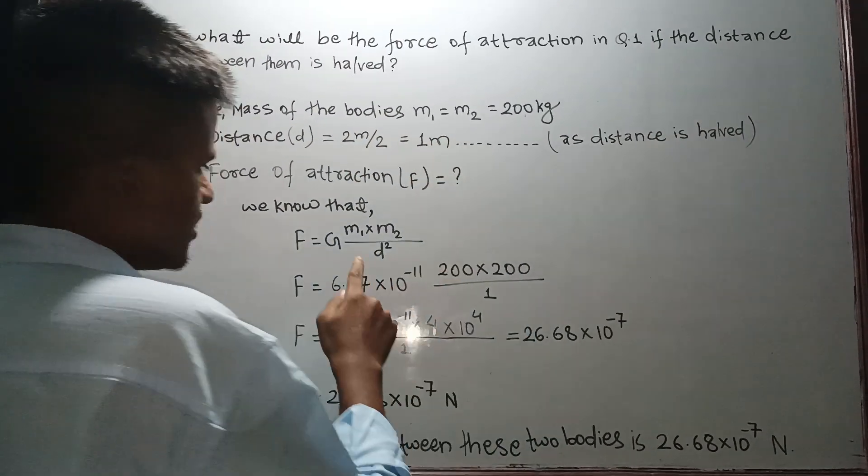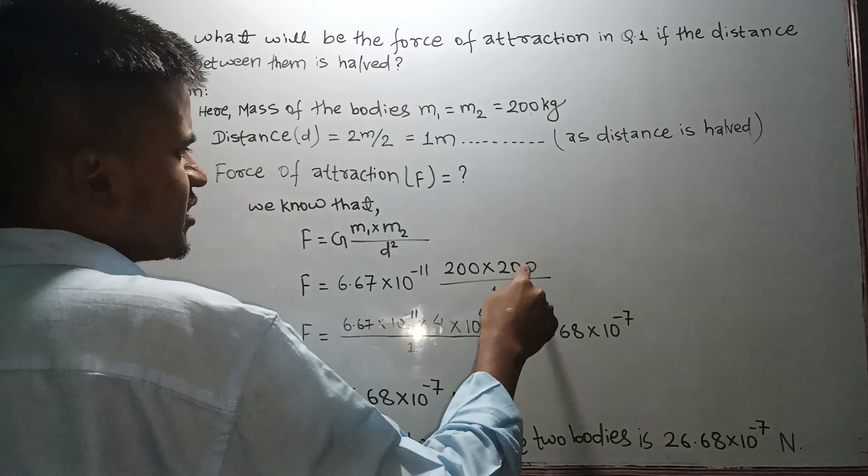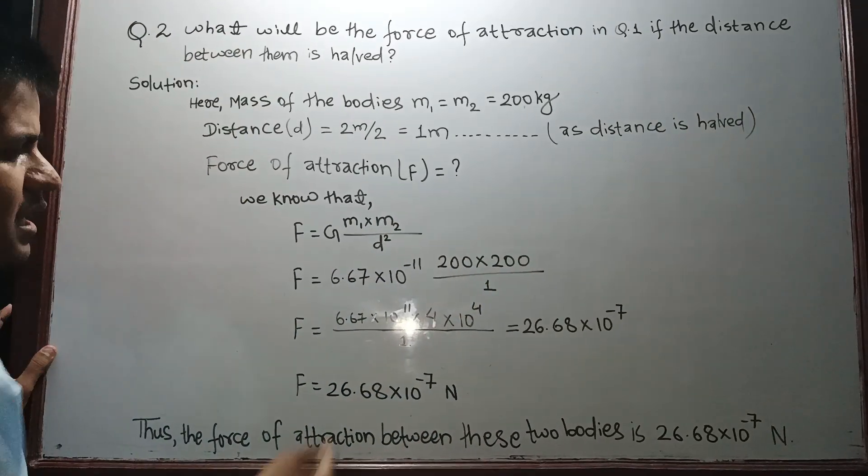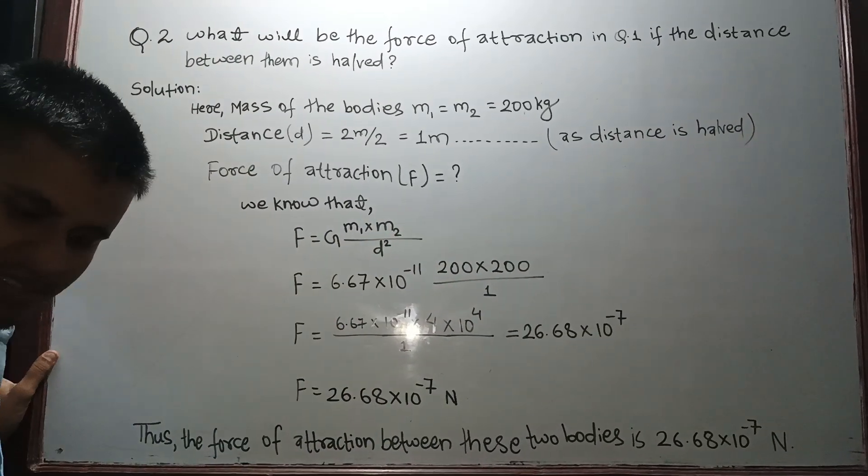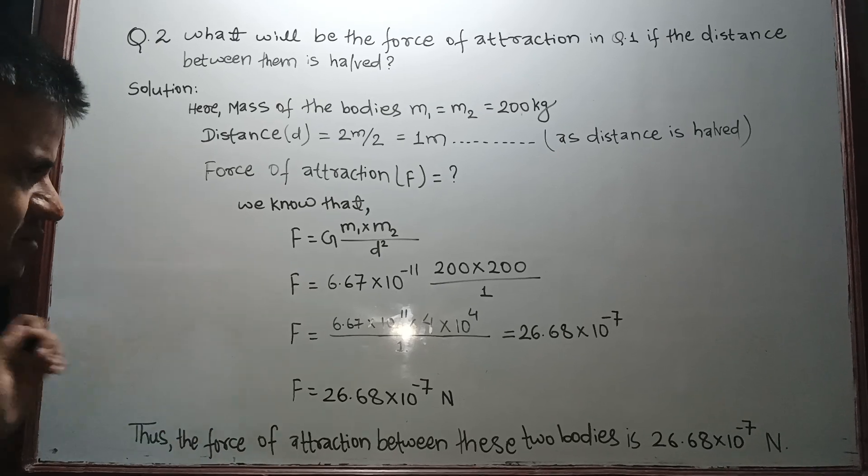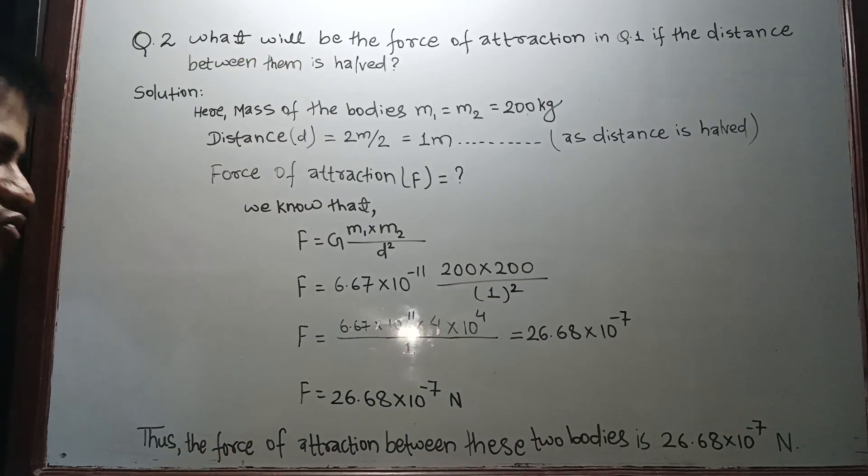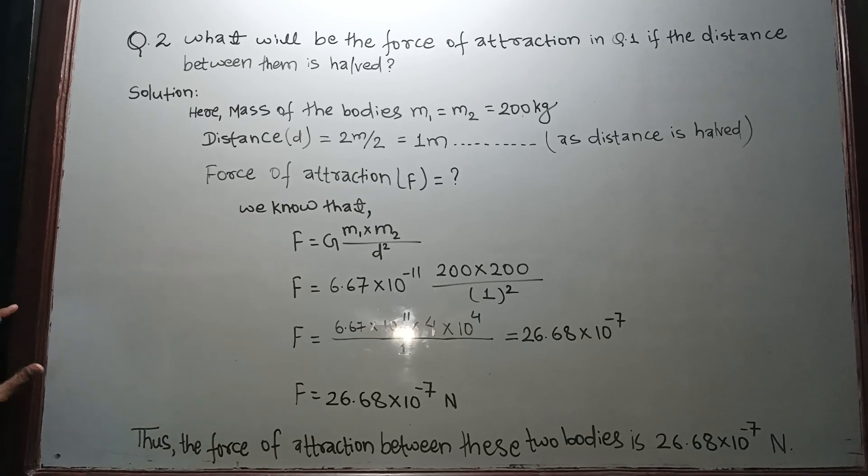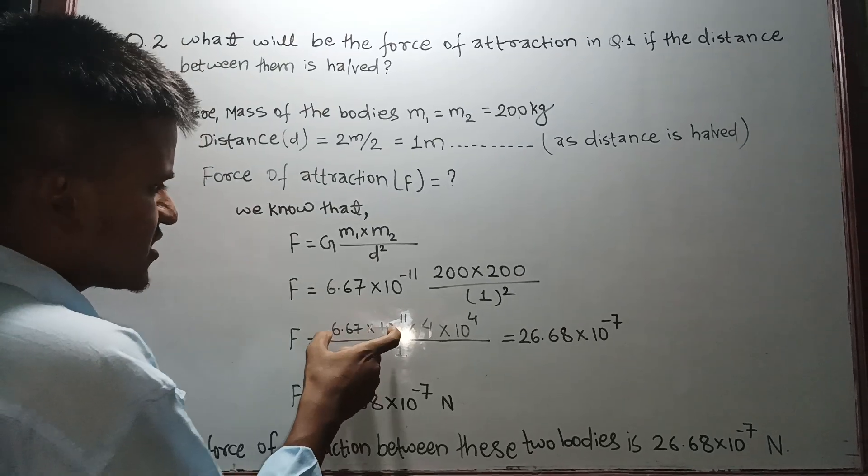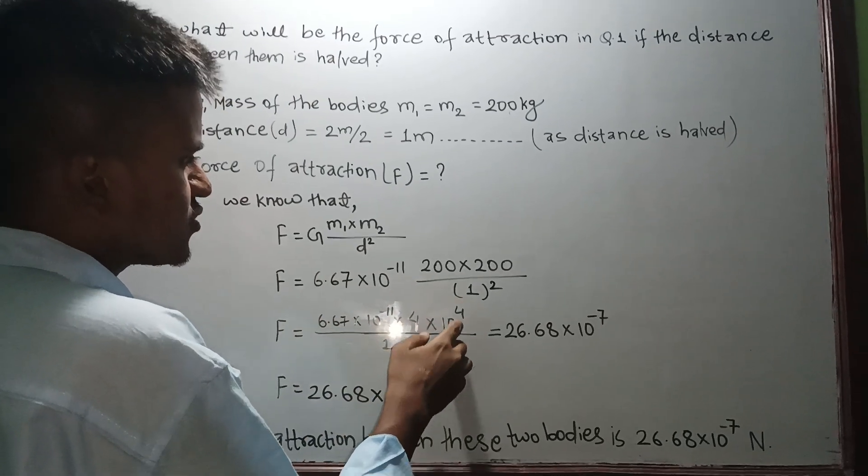So that is 200 × 200 / 1. And now this is like d squared, so it will be 1 squared. So F equals to 6.67 × 10⁻¹¹ × 4 × 10⁴. From there, 4 × 10⁴, 1 squared equals to 1. We'll multiply 4 with this.